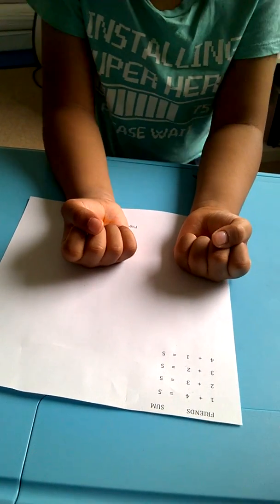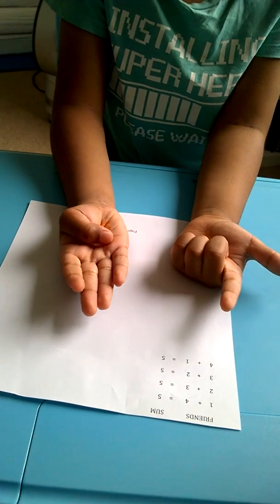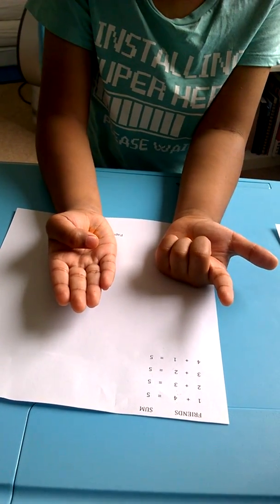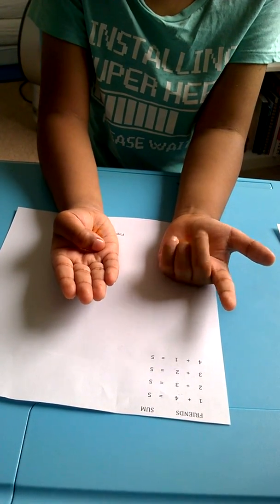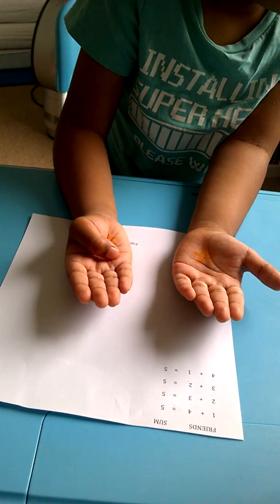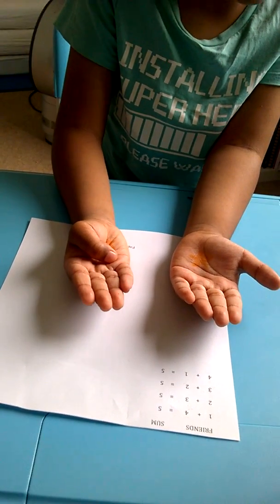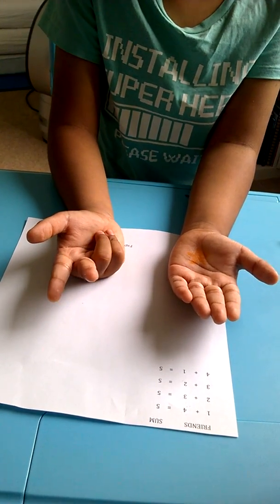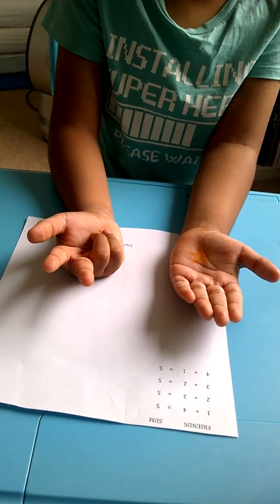Then, 64 plus 33. So, we have to open 30. And in the unit's hand, I don't have 3 more fingers. So, I have to open 5, and minus the 2. So, 97 is the answer.